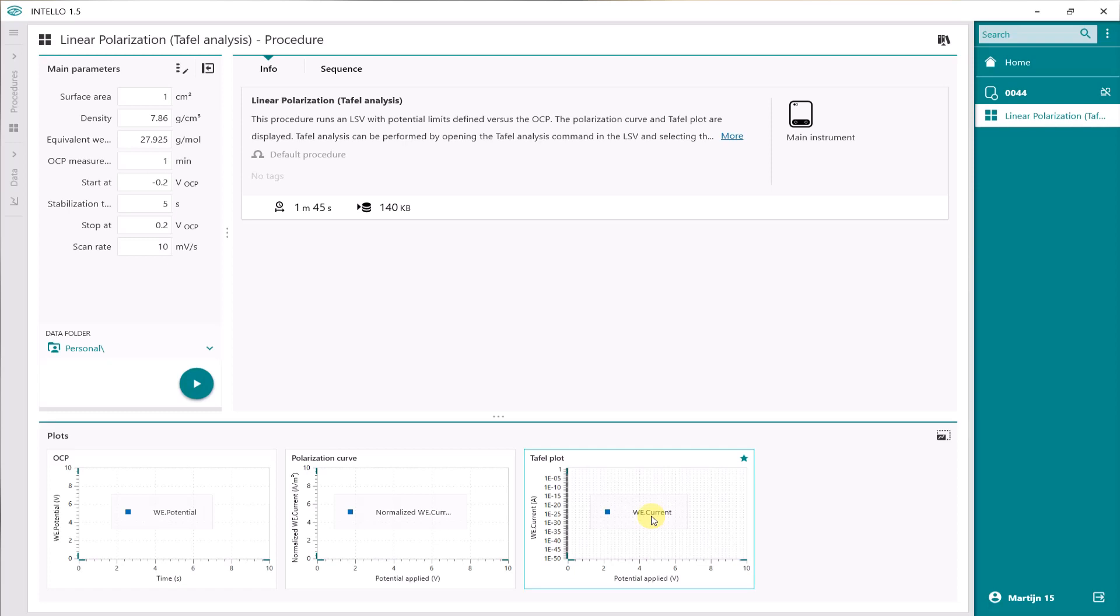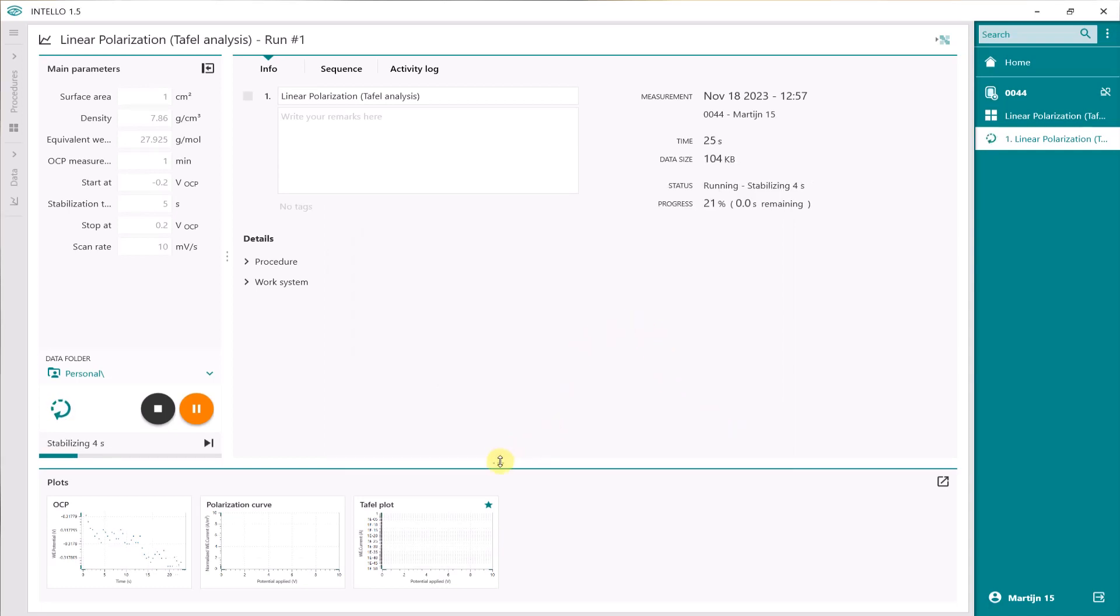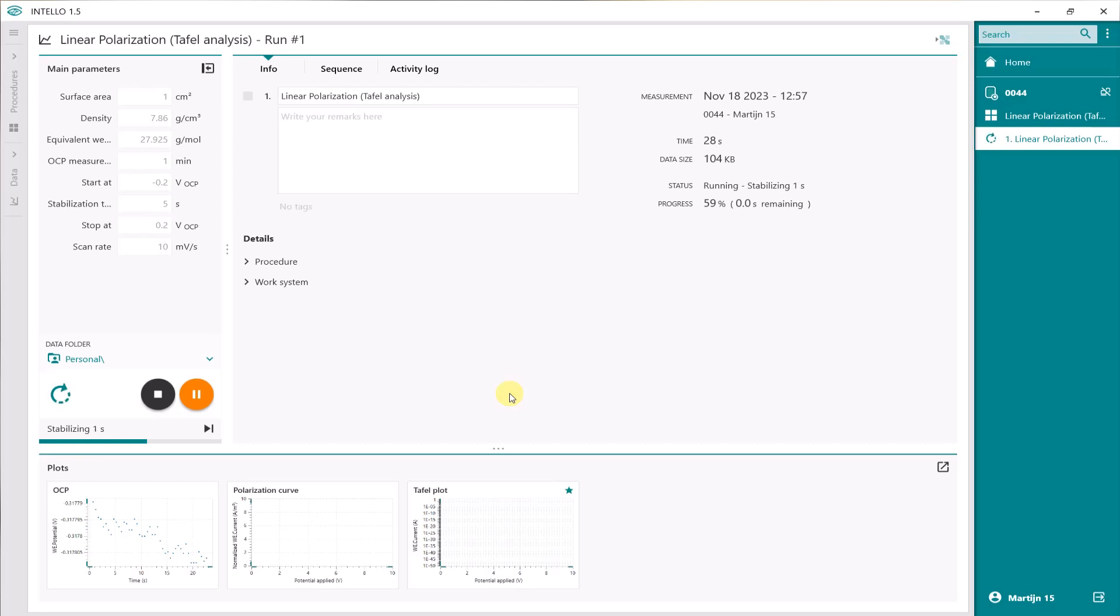At the end of the measurement, we will do the Tafel analysis. So we press start because the procedure is loaded into my Vionic system and the start button becomes available. We measure for one minute the OCP and if you are already equilibrated or stabilizing for a long time, you can accept these values. So you don't have to wait for the one minute. Normally, you measure for a longer time to get a stable open circuit potential. So we can accept this value. And then the measurement will start. It's stabilized for five seconds. And then we get a polarization curve. And at the same time, we can see the Tafel plot.